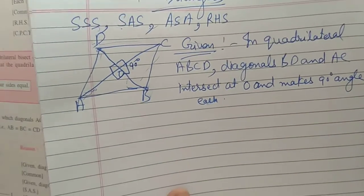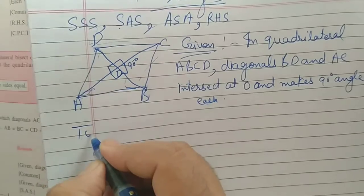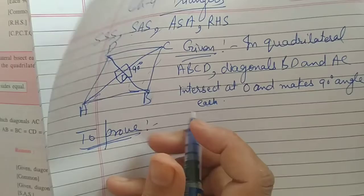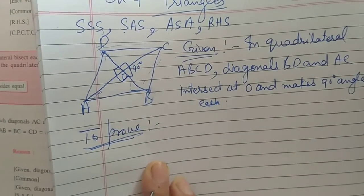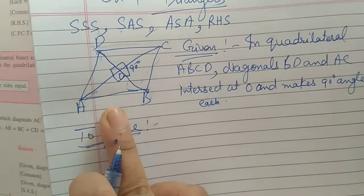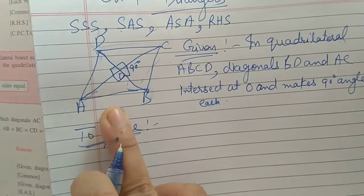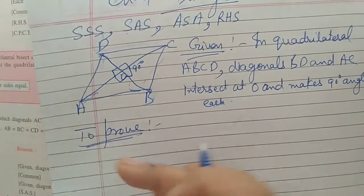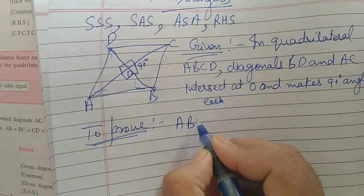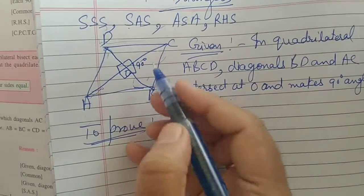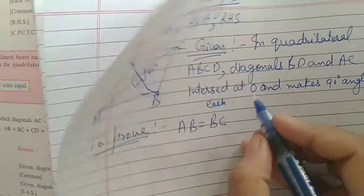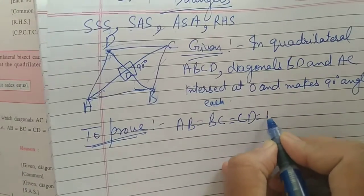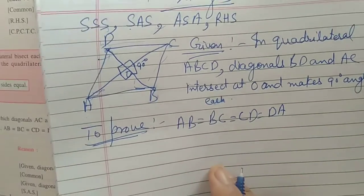Next step is to prove. What to prove? That this quadrilateral is a rhombus. In rhombus what will you prove? That all the sides are equal. Means AB is equal to BC. Another side is CD. And this one is AD. Is equal to CD is equal to DA. This we have to prove.